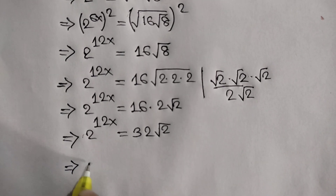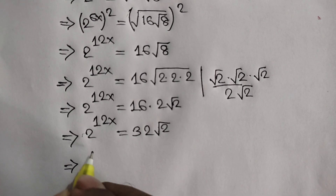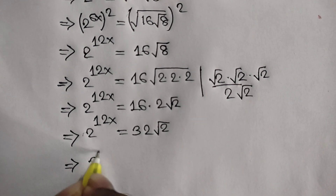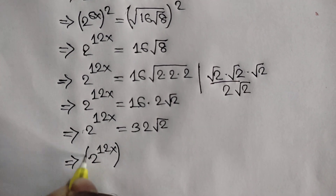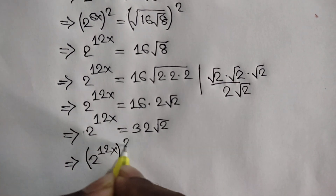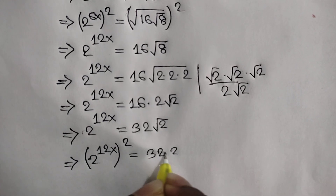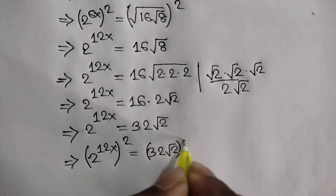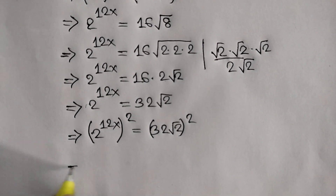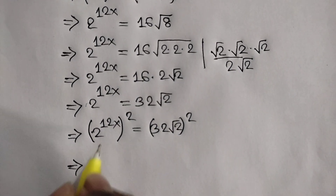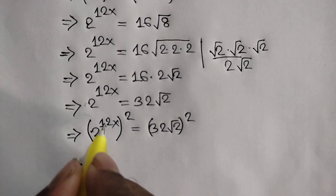Again, squaring both sides, we write 2 to the power 12x, whole to the power 2, is equal to 32 times the square root of 2, whole to the power 2. Here we will write 2 to the power 2.